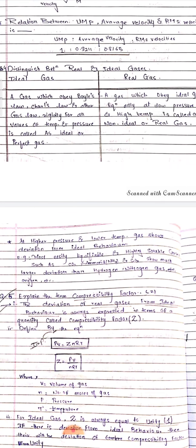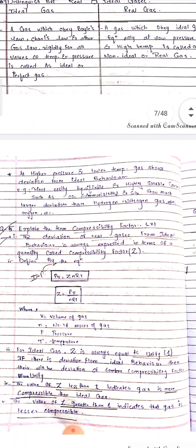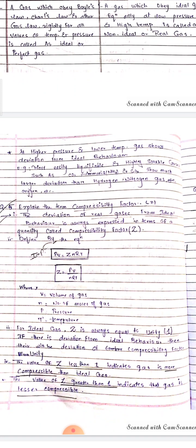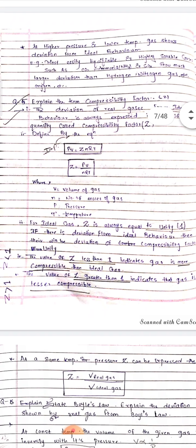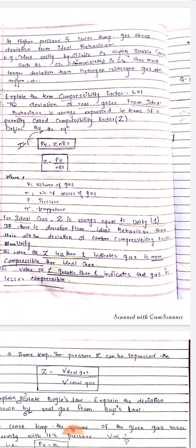Now let's expand on the compressibility factor Z. Whatever deviation exists for real gases from ideal behavior is always expressed in terms of Z, which is called the compressibility factor. PV is equal to ZnRT, and Z is equal to PV by nRT, where V is the volume of the gas, n is the number of moles, P is the pressure, and T is the temperature. For ideal gas, Z is always equal to unity. If there is deviation from ideal behavior, Z deviates from unity. Z less than 1 indicates the gas is more compressible than ideal gas; Z greater than 1 indicates the gas is less compressible. Z can also be expressed as Z equals V-real divided by V-ideal.